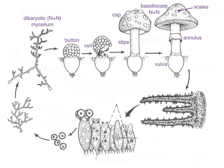Let's look at some details here. When it's young, it's a button, and in this particular species the whole thing is covered by a veil. Then as the stipe extends, it breaks that veil, and some little bits of the veil end up being scales on the top of the mushroom cap. There are other parts that form the annulus around the stipe, and then there's also the volva at the base of the mushroom.